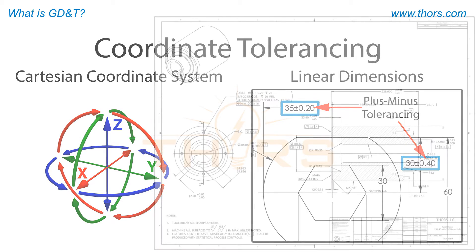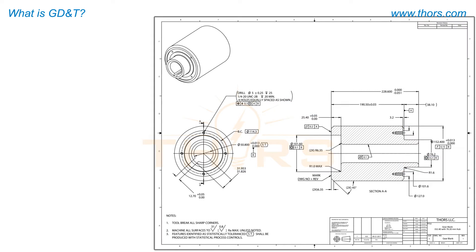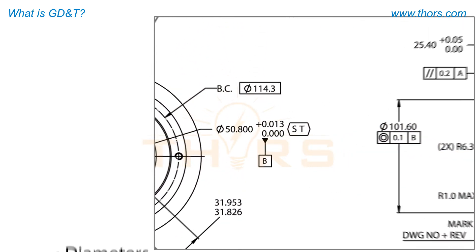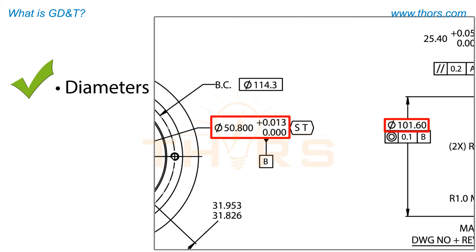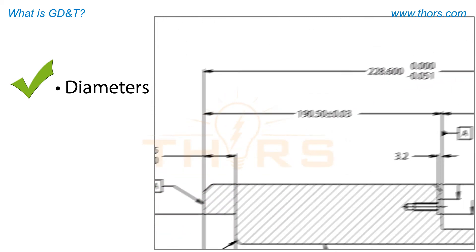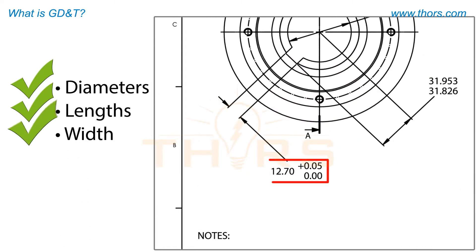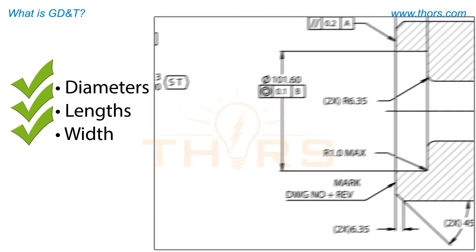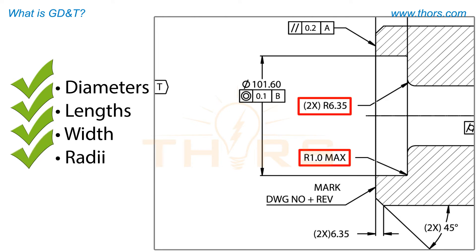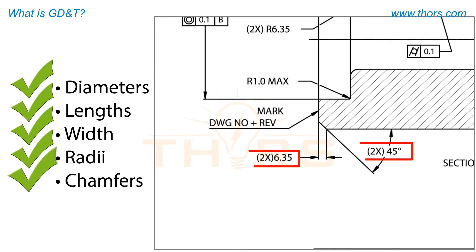While this method of tolerancing can adequately describe size dimensions of features such as diameters, lengths, width, radii, and other non-critical features like chamfers, it also has several limitations.